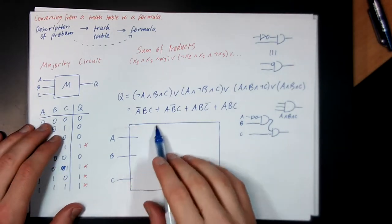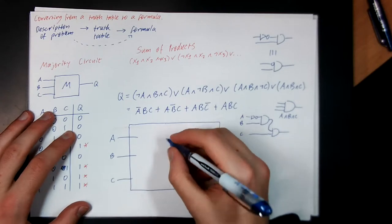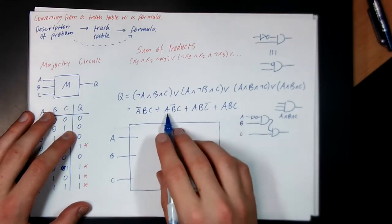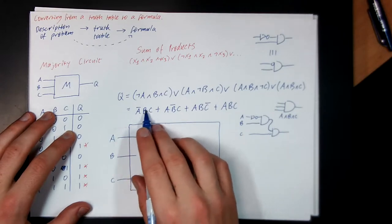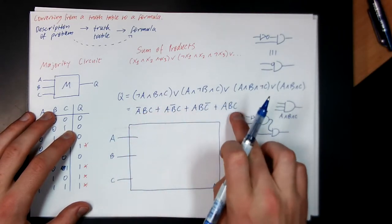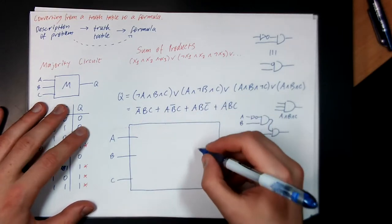Okay, so let's draw this equation out. So I'm going to need one, two, three, four AND gates. Each of them are three inputs. And then we OR all of them together. So I can use one big OR gate with four inputs.